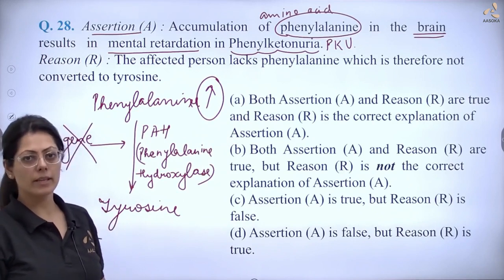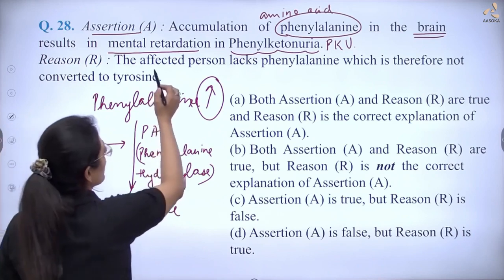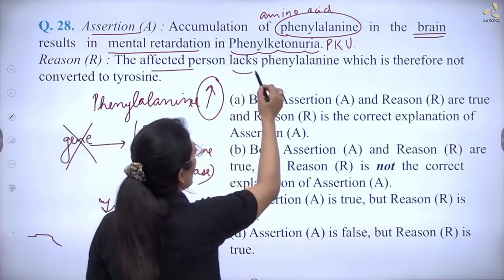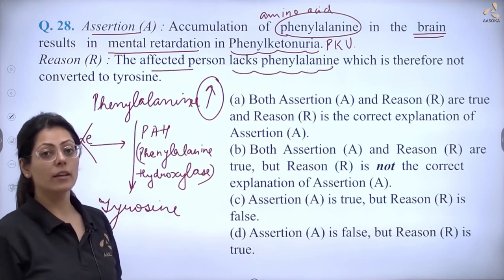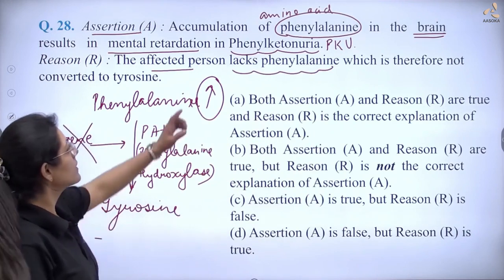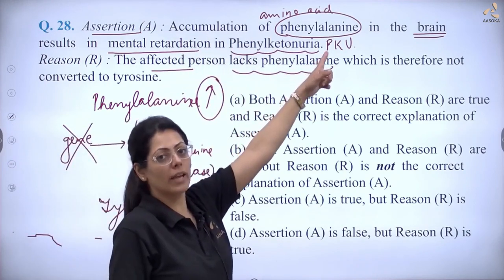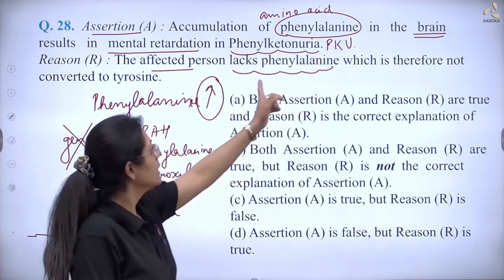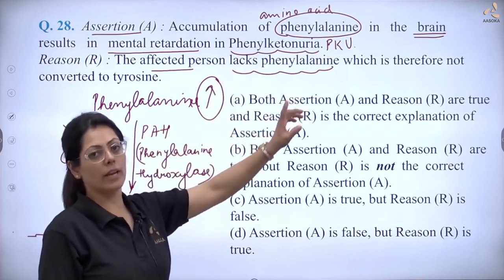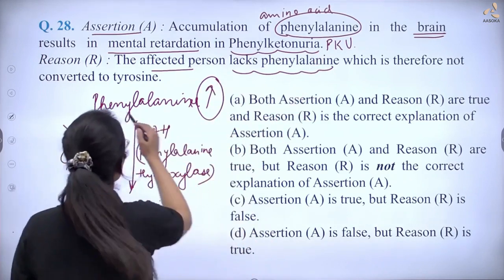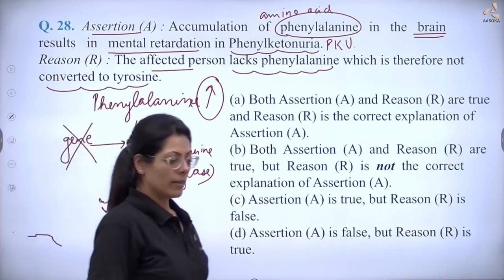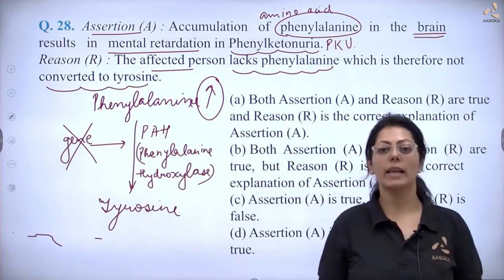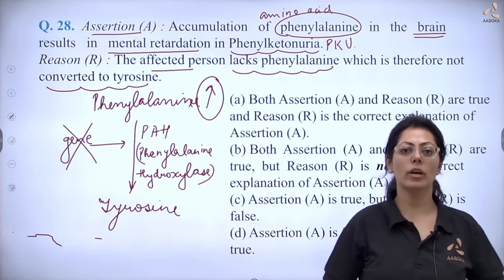Now, which reason is exactly correct? The reason says the affected person lacks phenylalanine, and therefore it is not converted to tyrosine. So the reason is saying that phenylalanine is not being made in the body.